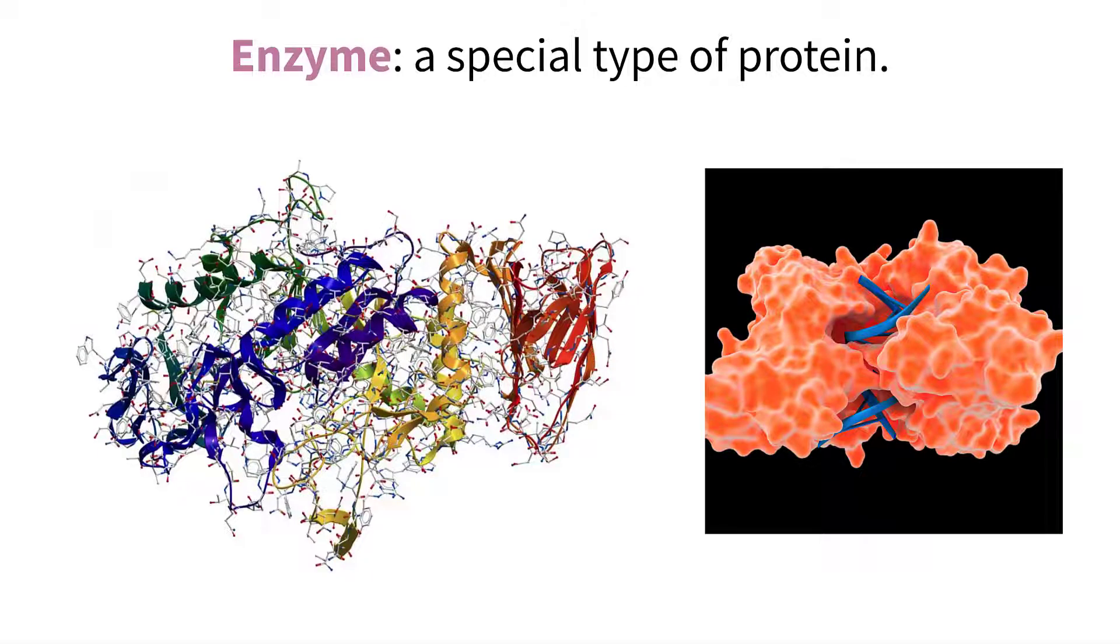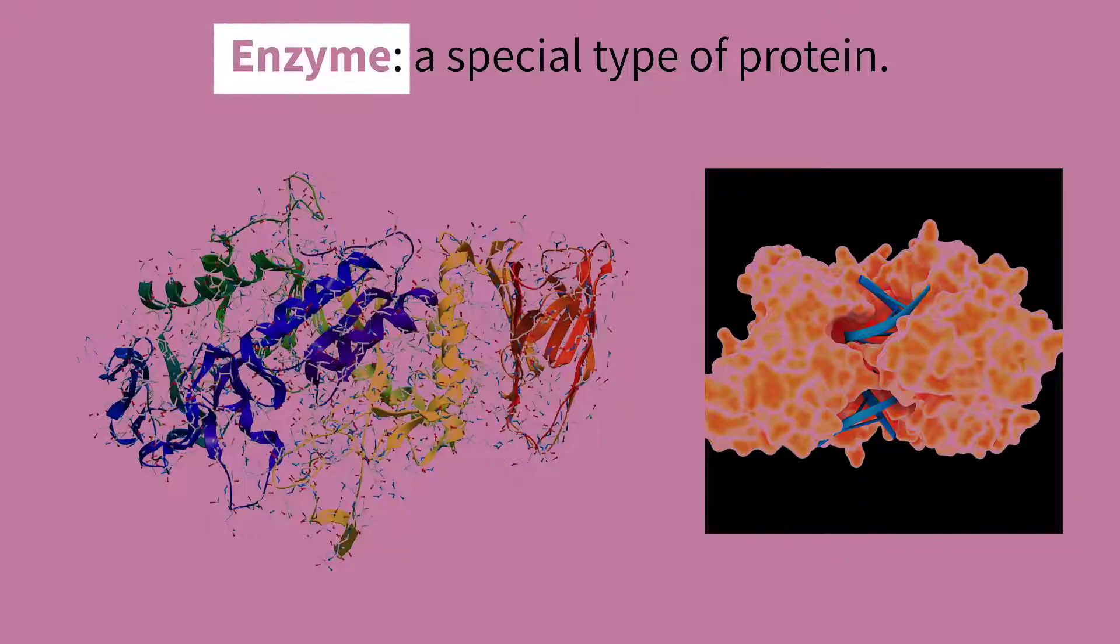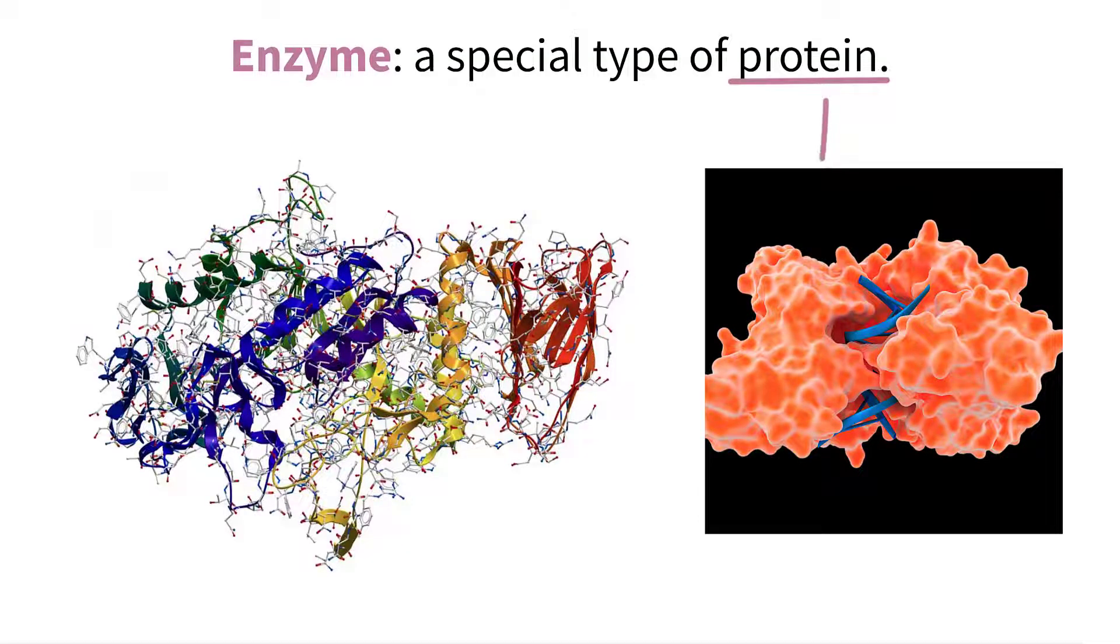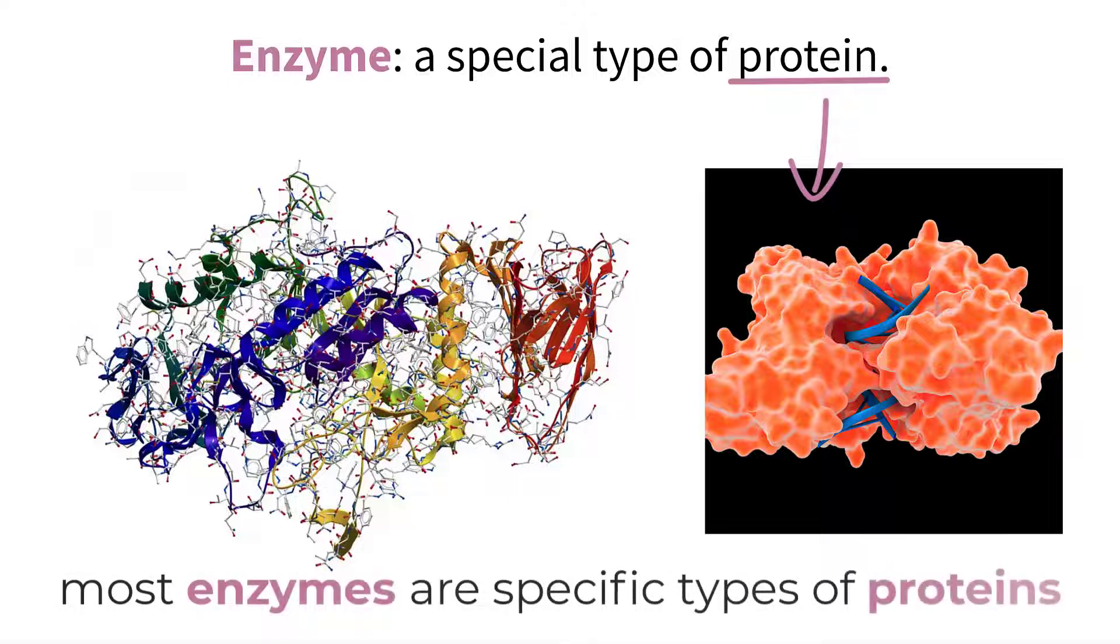Welcome to the IB Biology interactive lecture video on section 2.5 enzymes. If you know a bit about proteins, you've probably heard about enzymes. Most enzymes are specific types of proteins called globular proteins that have the ability to affect chemical reactions in the body.